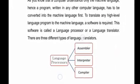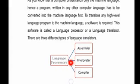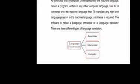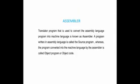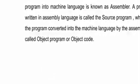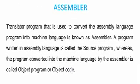There are three different types of language translator programs. They are assembler, compiler, and interpreter. First, you will learn about assembler. It is a translator program that is used to convert the assembly language program into machine language.